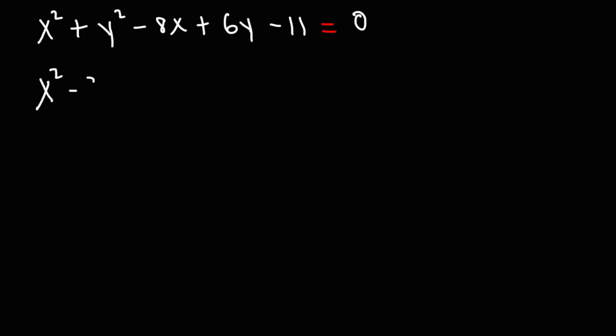So here's what you need to do. First, bring the x variables together. I'm going to leave a space here. And then bring the y variables together. And then leave a space. Now the negative 11, I'm going to move to the other side. It's going to change from negative 11 to positive 11.